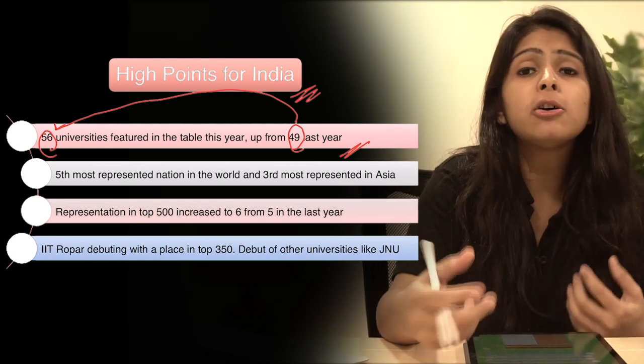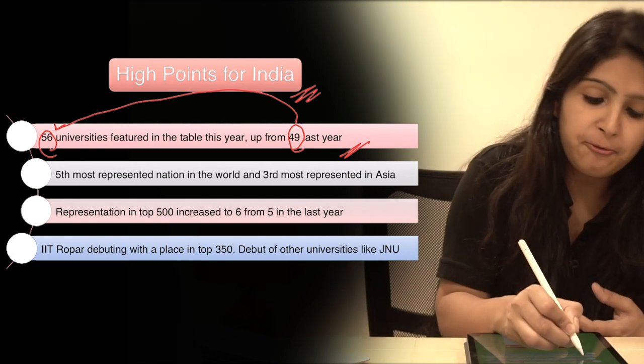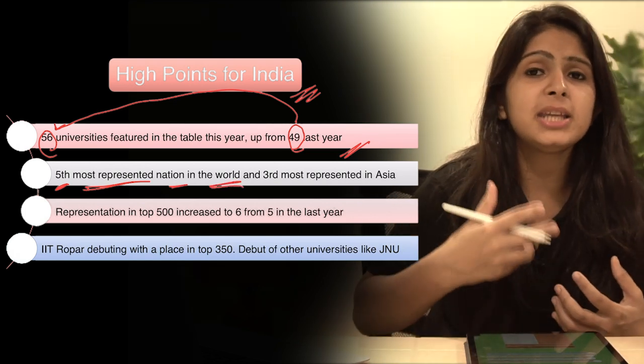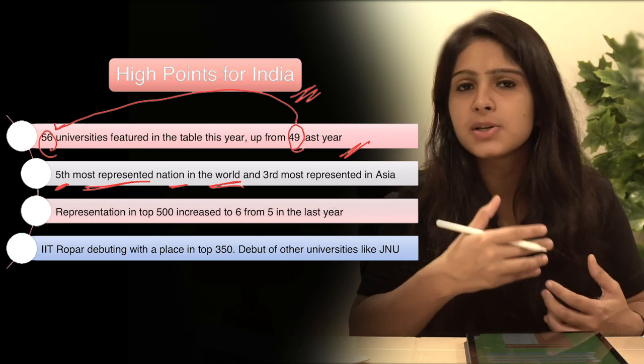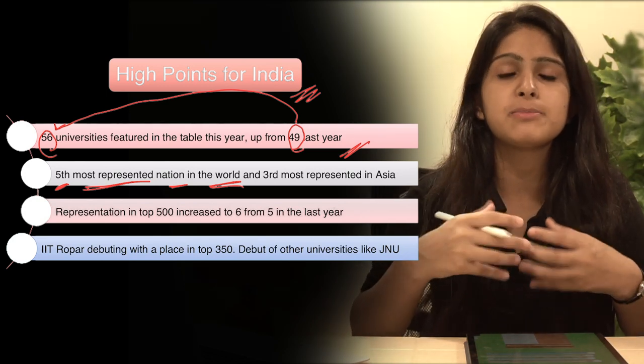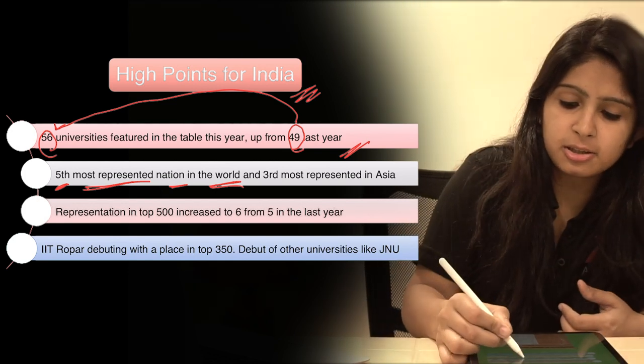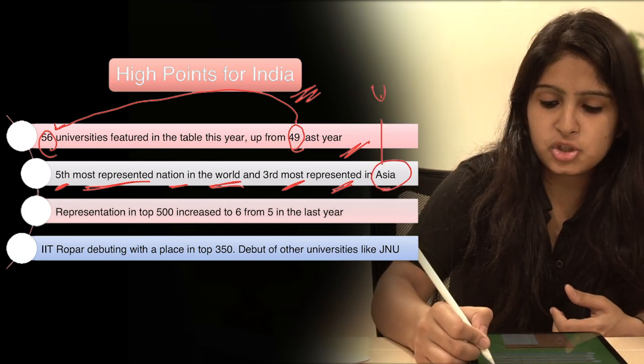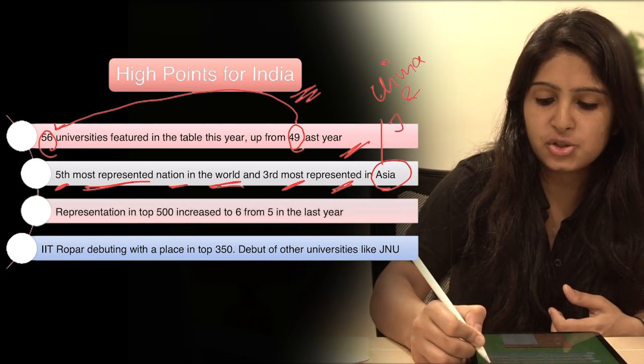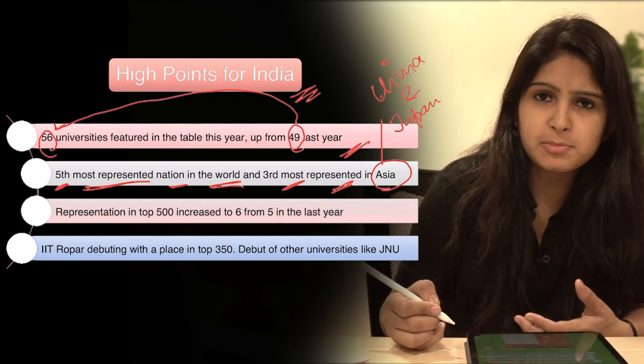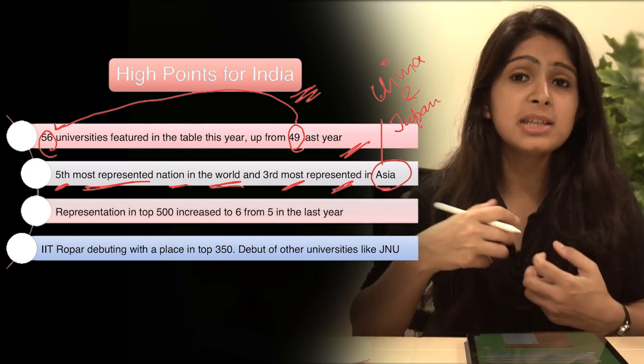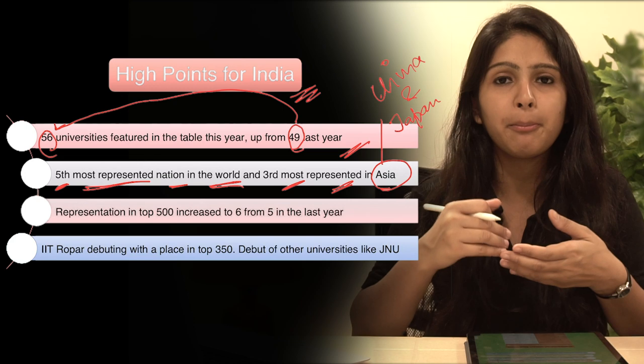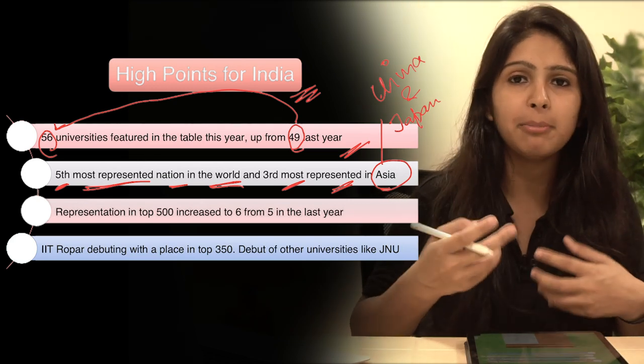Now moving on to the next point. India is the fifth most represented nation in the world, that is if we count which country has the most universities in this ranking, then in that rank India comes on fifth number. And similarly India is the third most represented country in Asia after China and Japan.